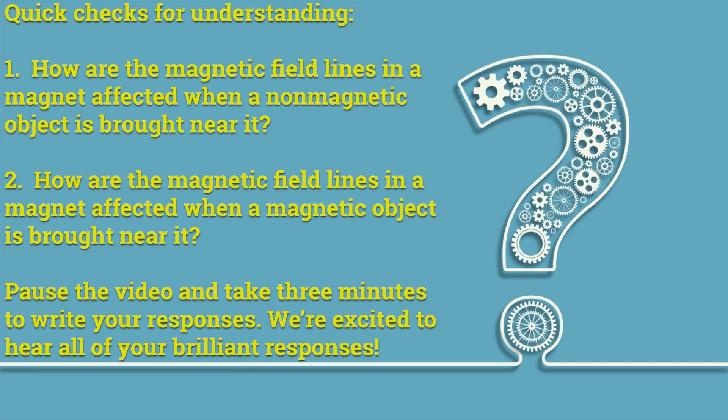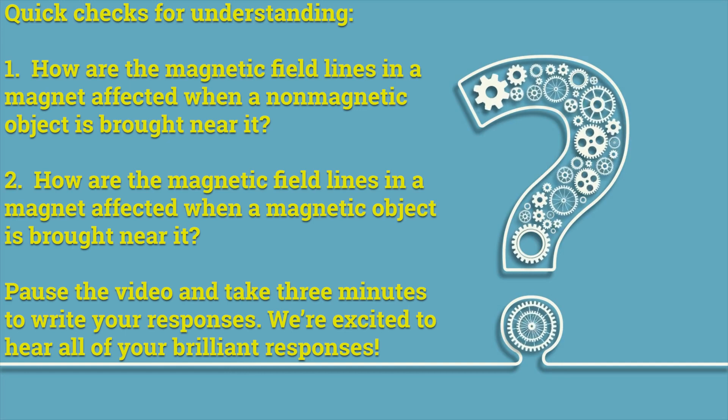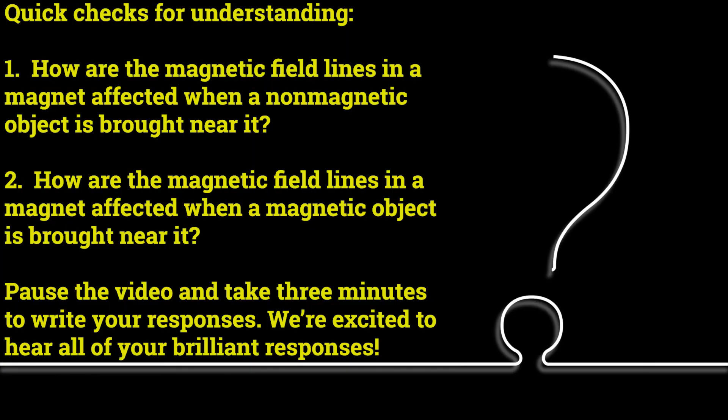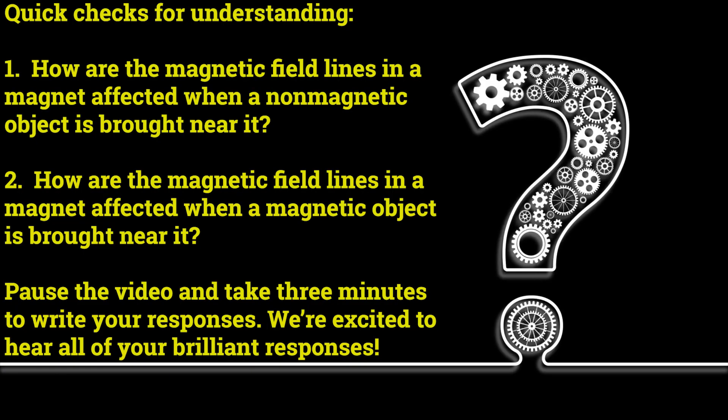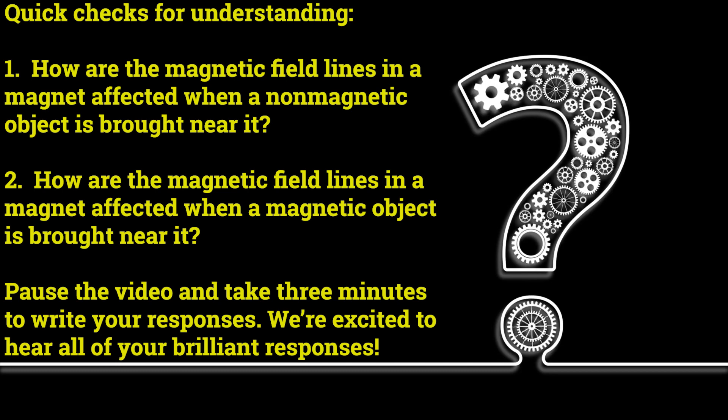Quick checks for understanding. Number one, how are the magnetic field lines in a magnet affected when a magnetic object is brought near it? Number two, how are the magnetic field lines in a magnet affected when a non-magnetic object is brought near it? Pause the video and take three minutes to write your responses. We're excited to hear all of your brilliant responses.